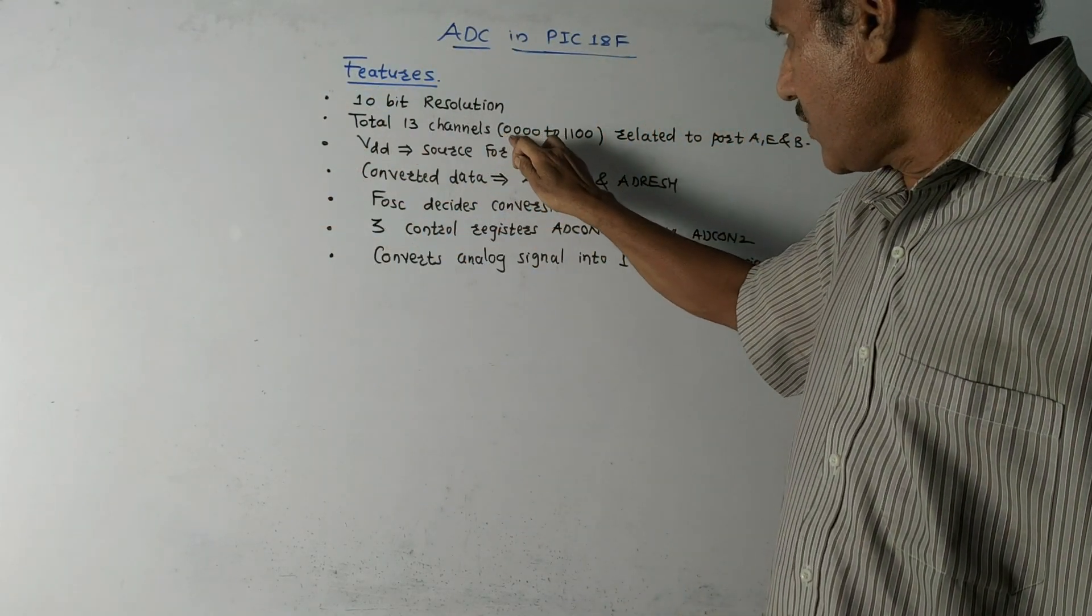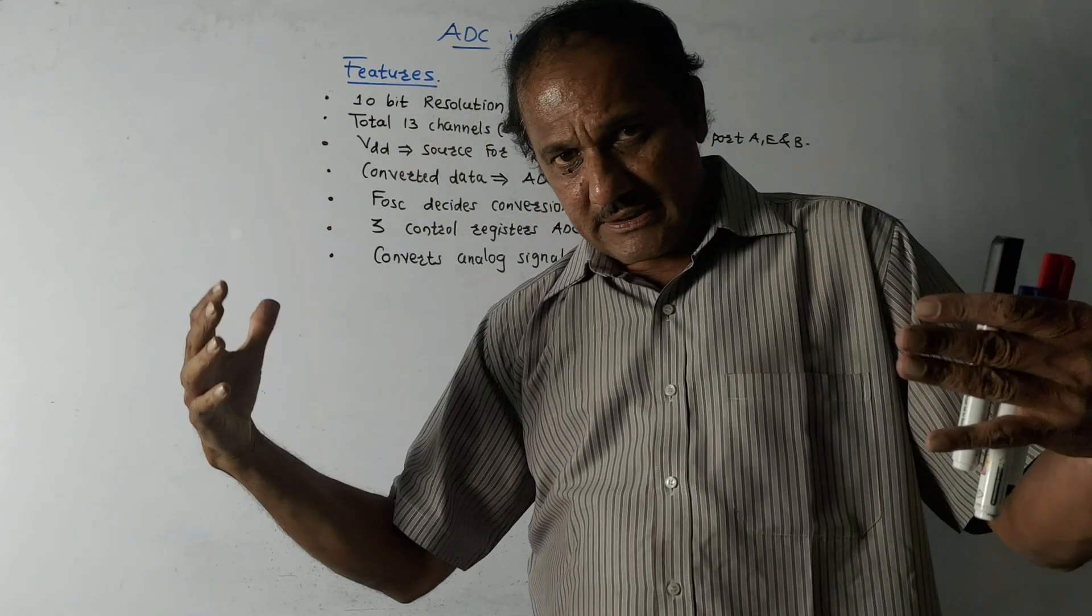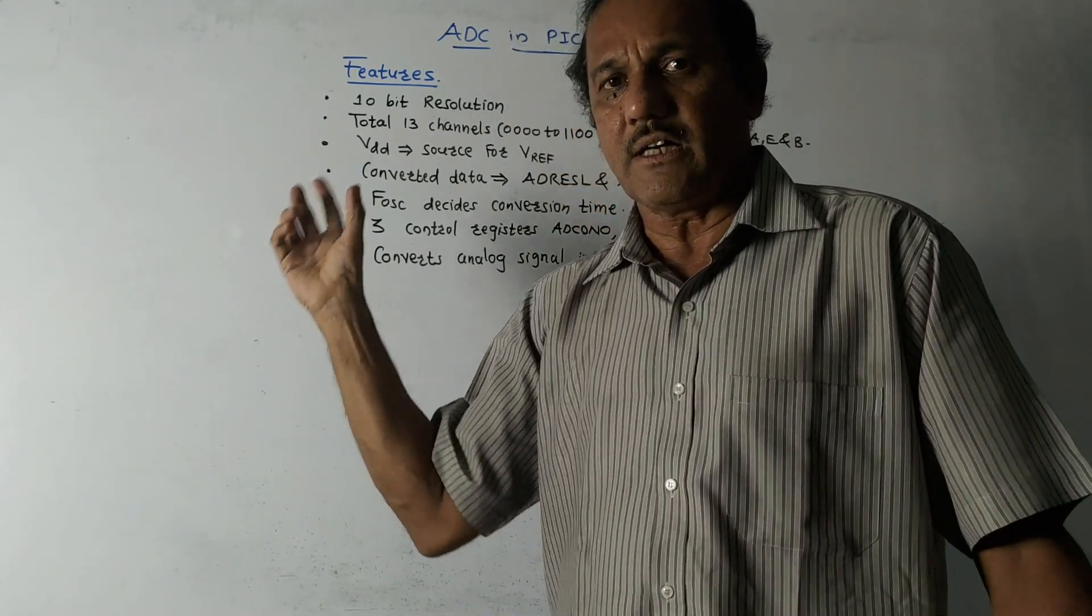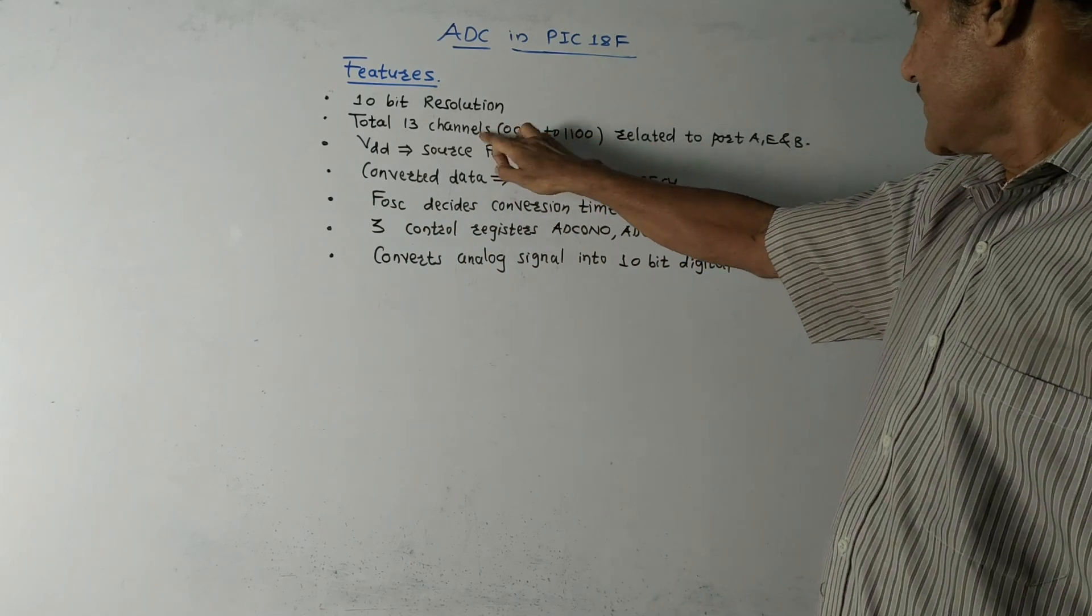These are from number 0000 to 1111, and these channels can be selected by choosing the corresponding bits in the ADC control register that also we have discussed. So total 13 channels are supported.